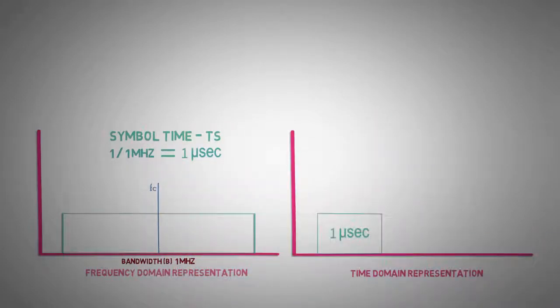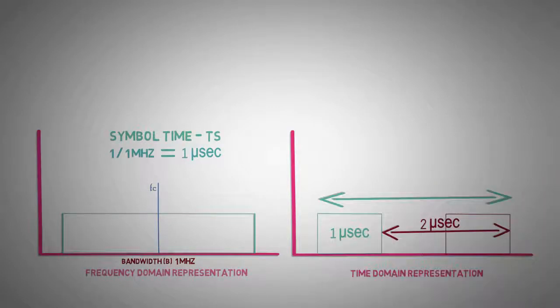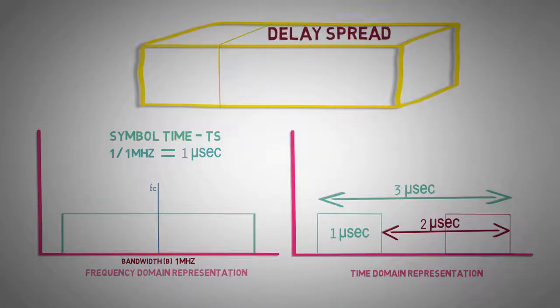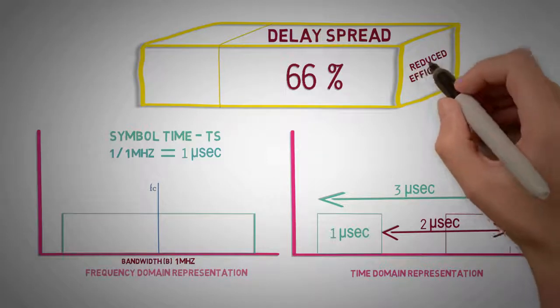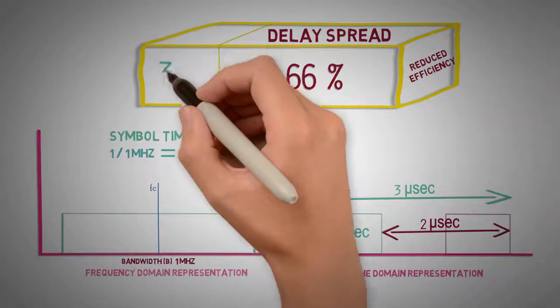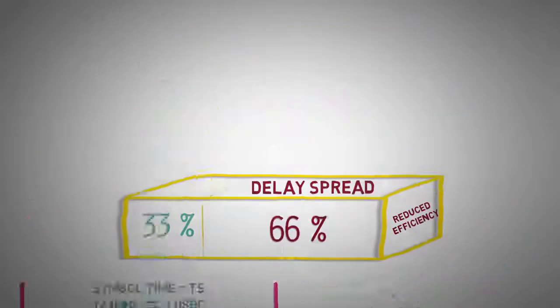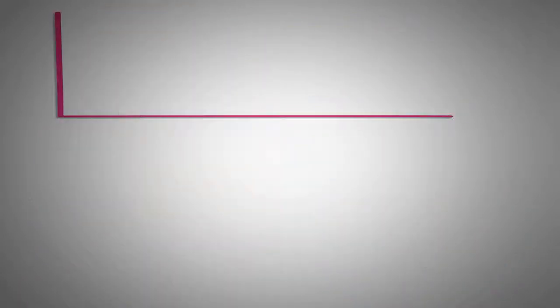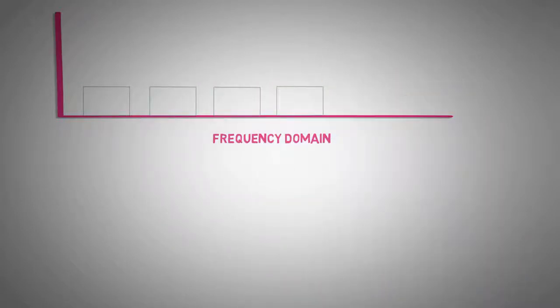Given that the delay spread of the channel is of 2 microseconds, the combined symbol time would be 3 microseconds, which means delay spread occupies 66% of the combined symbol time. Thus reducing the efficiency of the channel by 1 microsecond. As delay spread is difficult to control, the effect of delay spread can be minimized by using multiple sub-carriers of lesser bandwidth.